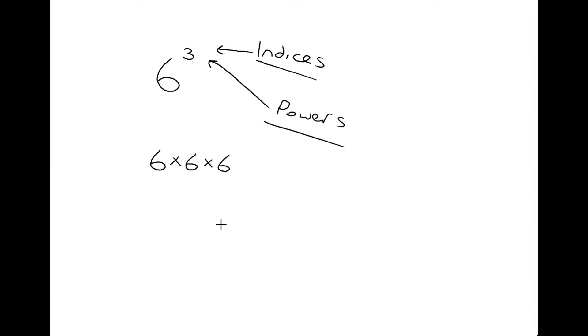So giving another example, if it was four to the power of five, we would take that four and multiply it one, two, three, four, five times.